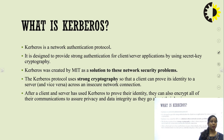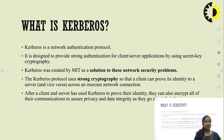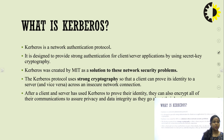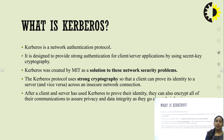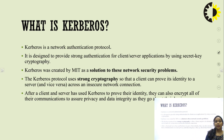The Kerberos protocol uses strong cryptography so that a client can prove its identity to a server, and vice versa, across an insecure network connection. The client provides their identity over the server across the insecure network connection and gets proper security while transferring information. After client and server use Kerberos to prove their identity, they can also encrypt all communication to ensure privacy and data integrity.